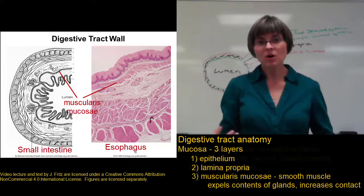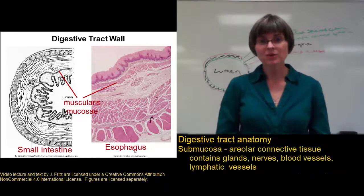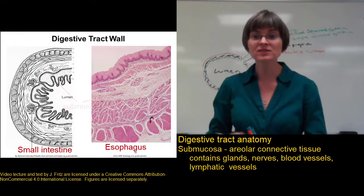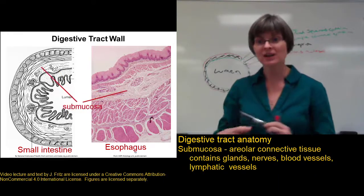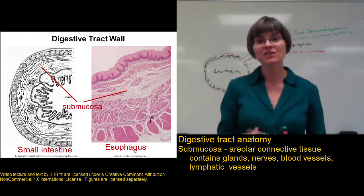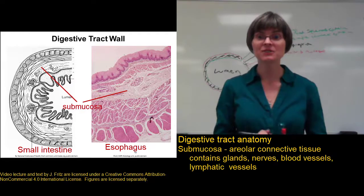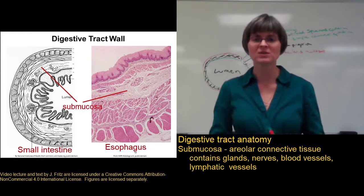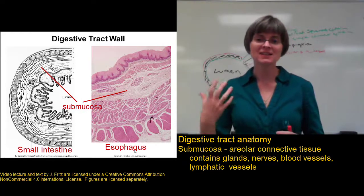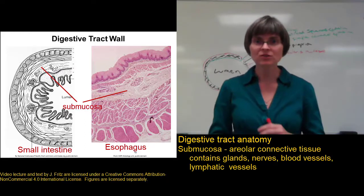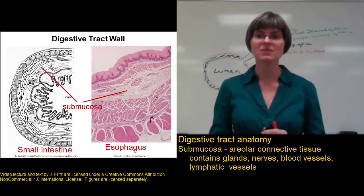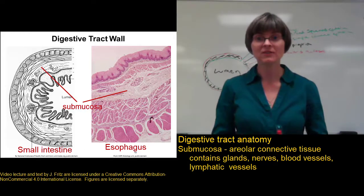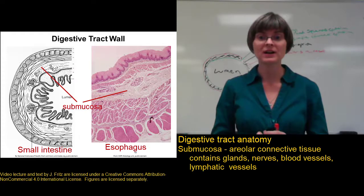If we go a little bit further past the mucosa, we get to an area called the submucosa. This is a thicker layer of connective tissue that helps to support the mucosa. It contains glands, nerves to control those glands and the muscles, and also some blood vessels for transport.